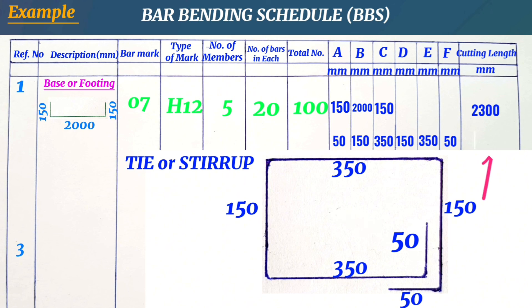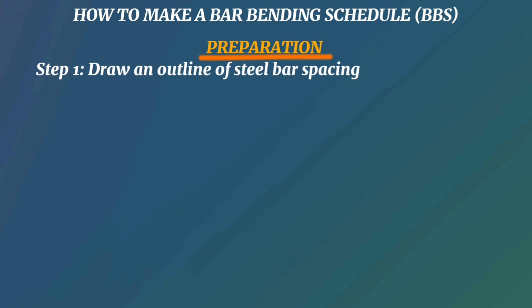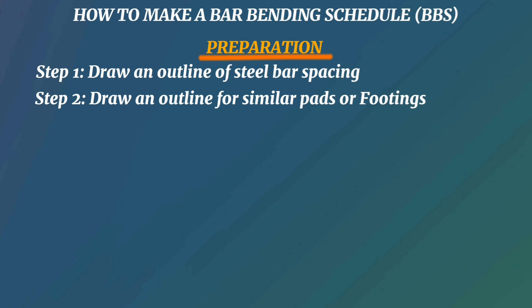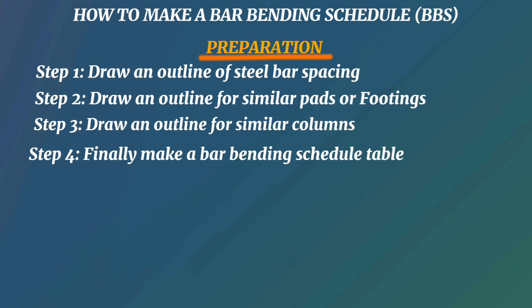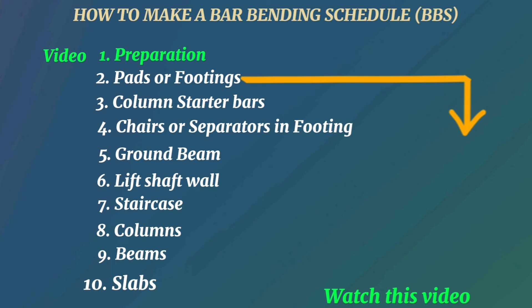This gives a total cutting length of 1 meter 100 millimeters — that is the cutting length and bend shape. In summary, before making a bar bending schedule you: draw an outline of steel bar spacing, draw an outline for similar pads or footings, draw an outline for similar columns, and finally make the bar bending schedule table. Everything discussed in this video is an introduction and overview of what the bar bending schedule is about. Check out the linked video on how to prepare the bar bending schedule for pads or footings, with the most accurate calculations the fastest way.